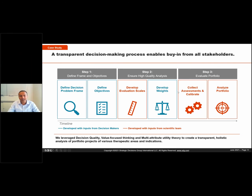I would like to spend a few minutes talking about these approaches and how we actually used this in the project in more detail. The first step is to define the frame, and once we defined the decision problem, we spent a lot of time and effort identifying the fundamental objectives. In interviews, we challenged decision makers to reveal their fundamental objectives by asking the question 'Why is this important?' This helped clarify and differentiate means objectives from fundamental objectives. We then developed objective hierarchies, adapting the structure with ideas from literature and experience. This is an important step that lays the foundation for the entire effort.